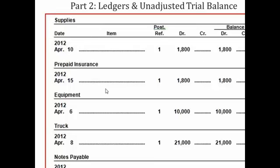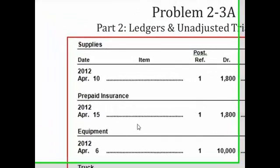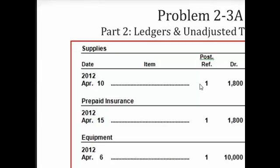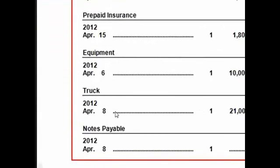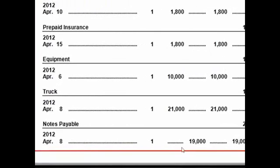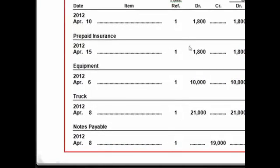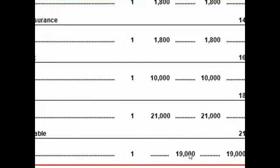You will do this for every single account listed in the journal. We are not duplicating the entire journal entry — just the line that belongs to the particular account you are going to the ledger for. Notes payable is a liability and has a normal credit balance. So on April 8th on journal page 1, we credited notes payable for $19,000, and now we have a credit balance of $19,000.